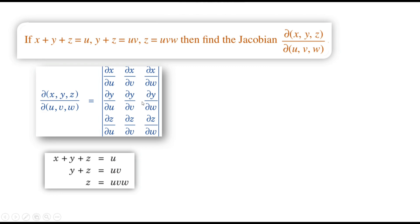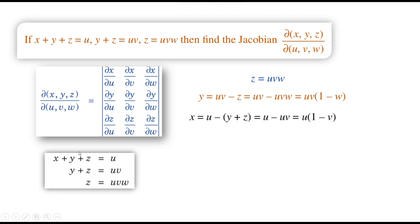From the third equation, z equals uvw. Substituting z into the second equation, y equals uv minus z equals uv minus uvw, which gives y equals uv(1 minus w). Substituting y and z into the first equation, x equals u minus (y plus z), where y plus z equals uv, giving x equals u(1 minus v). So x equals u(1-v), y equals uv(1-w), and z equals uvw.